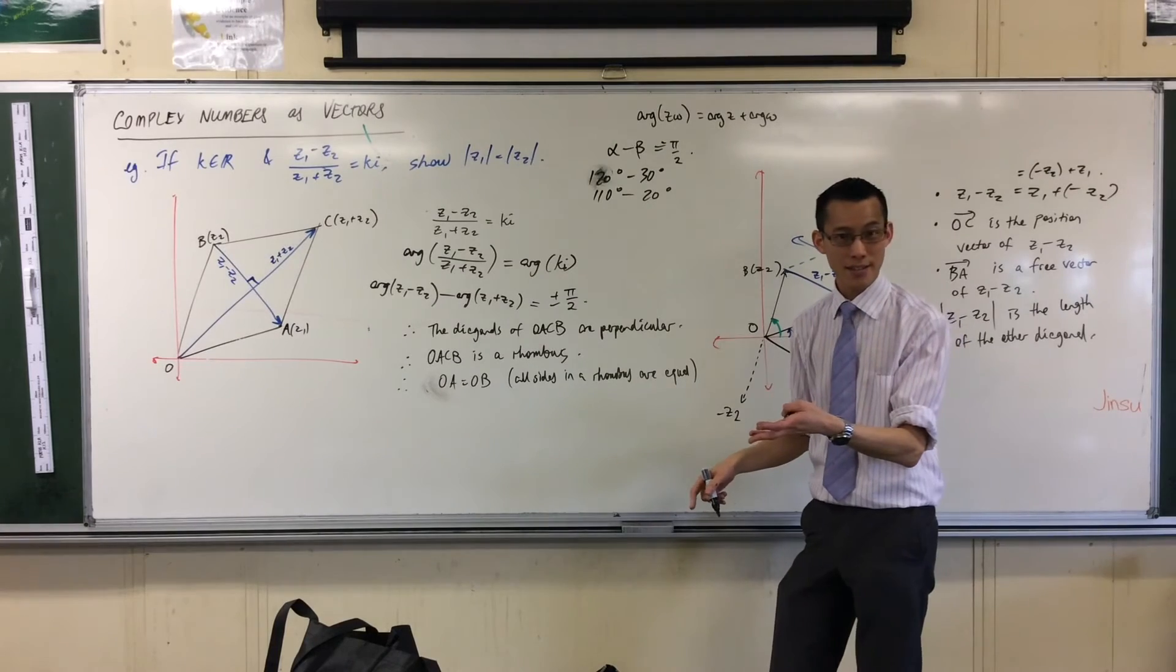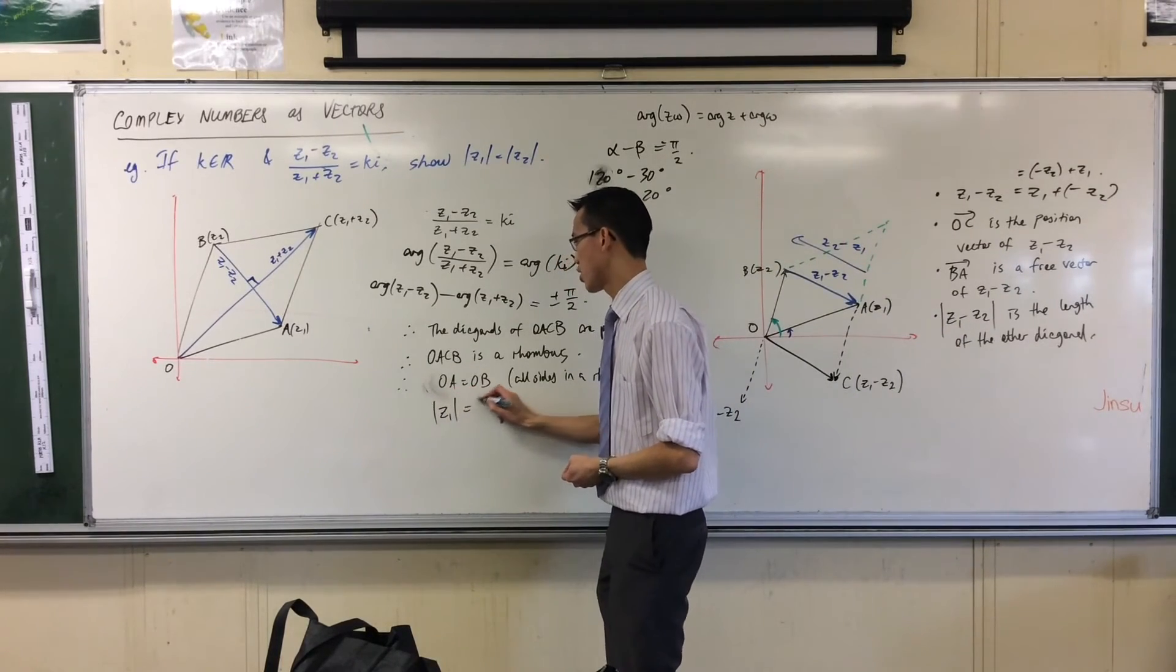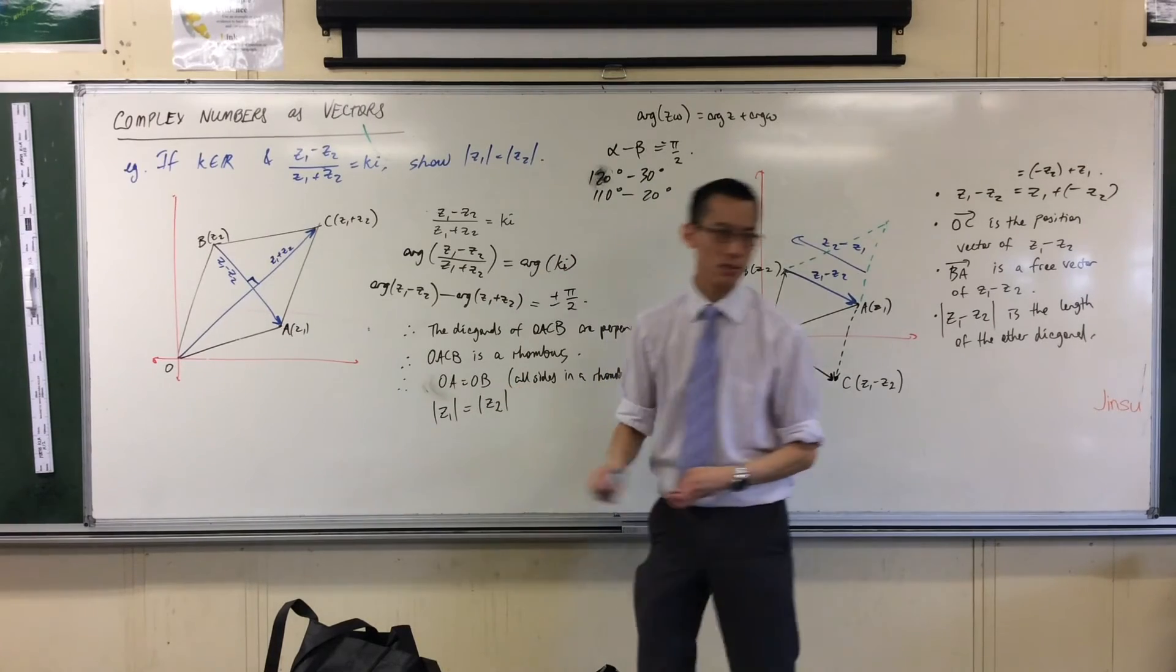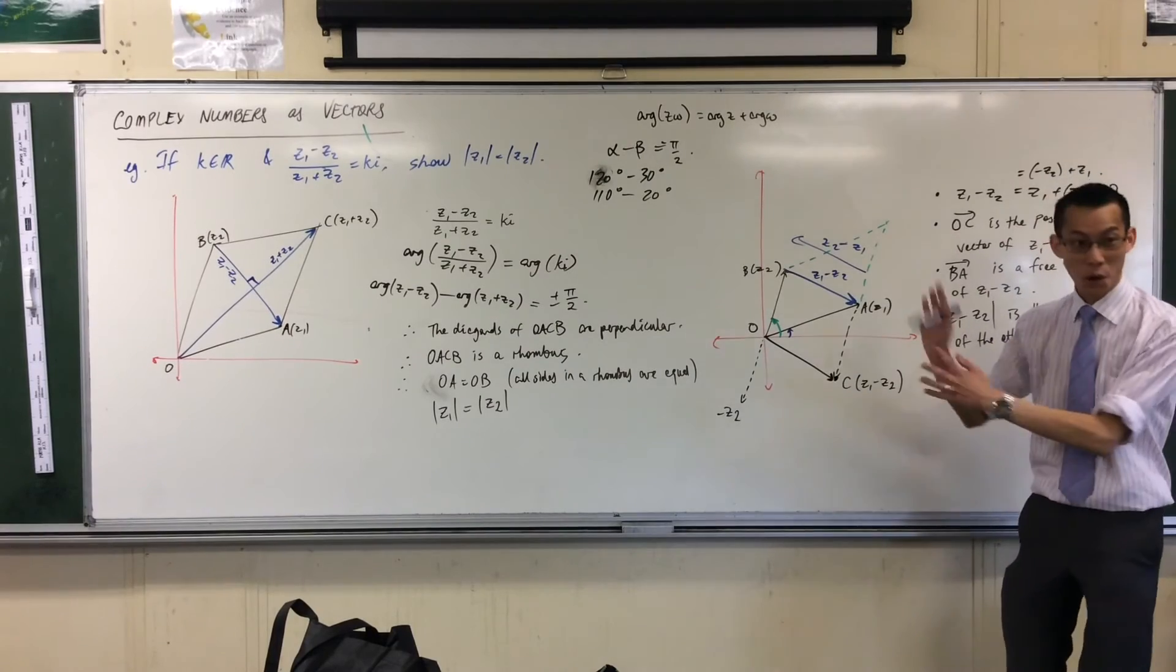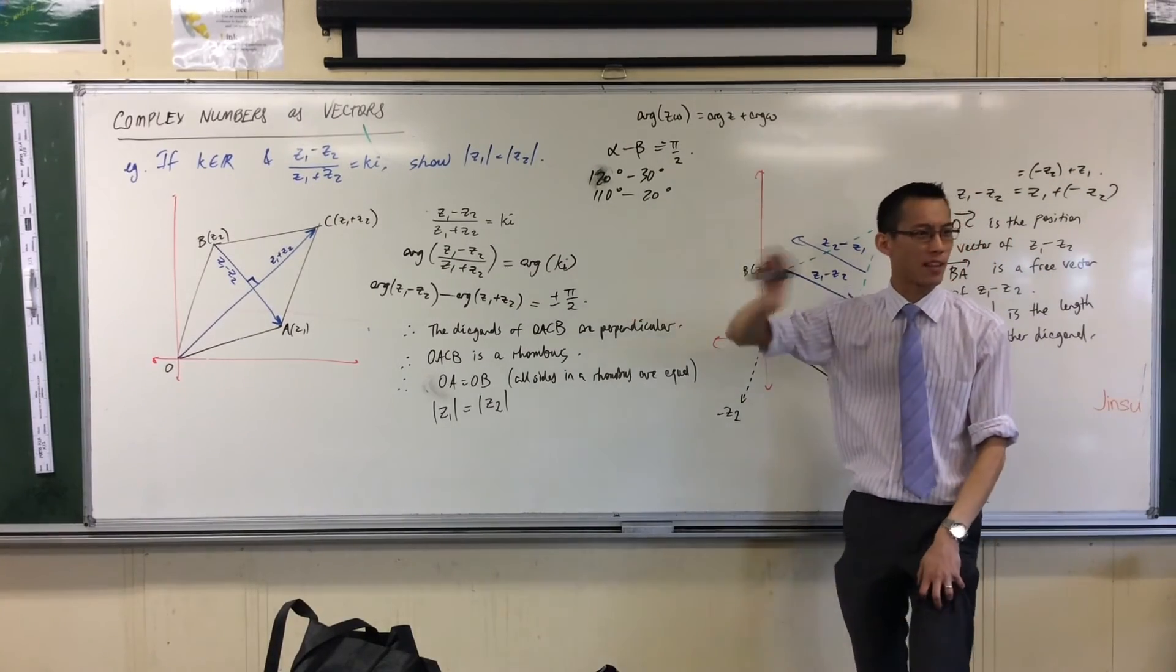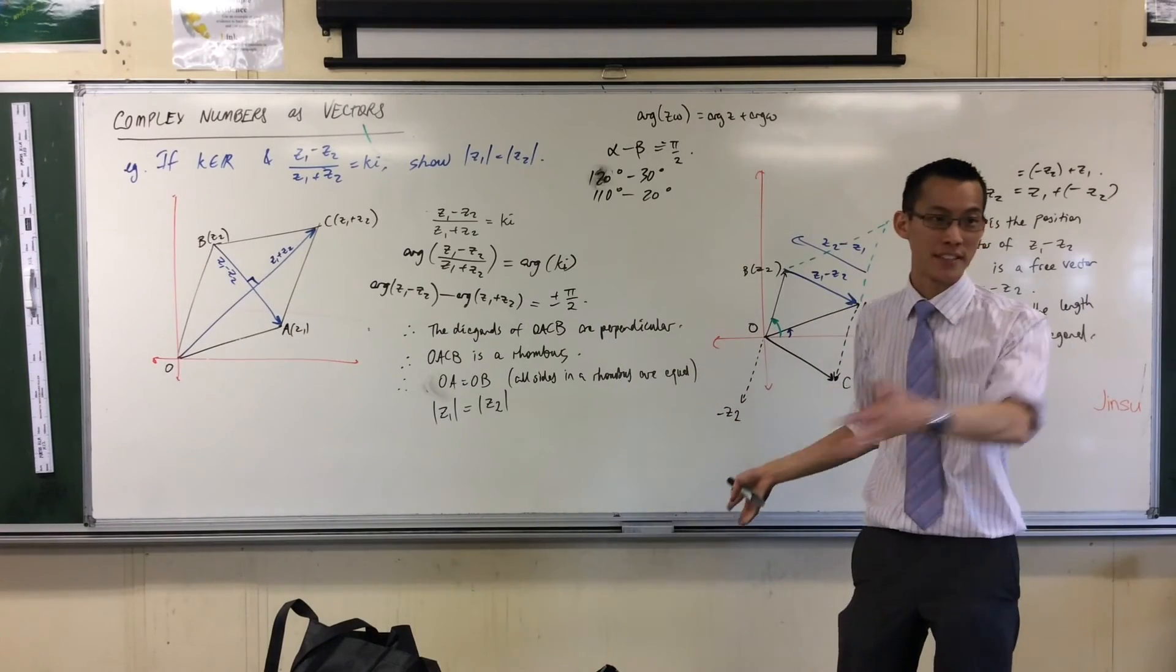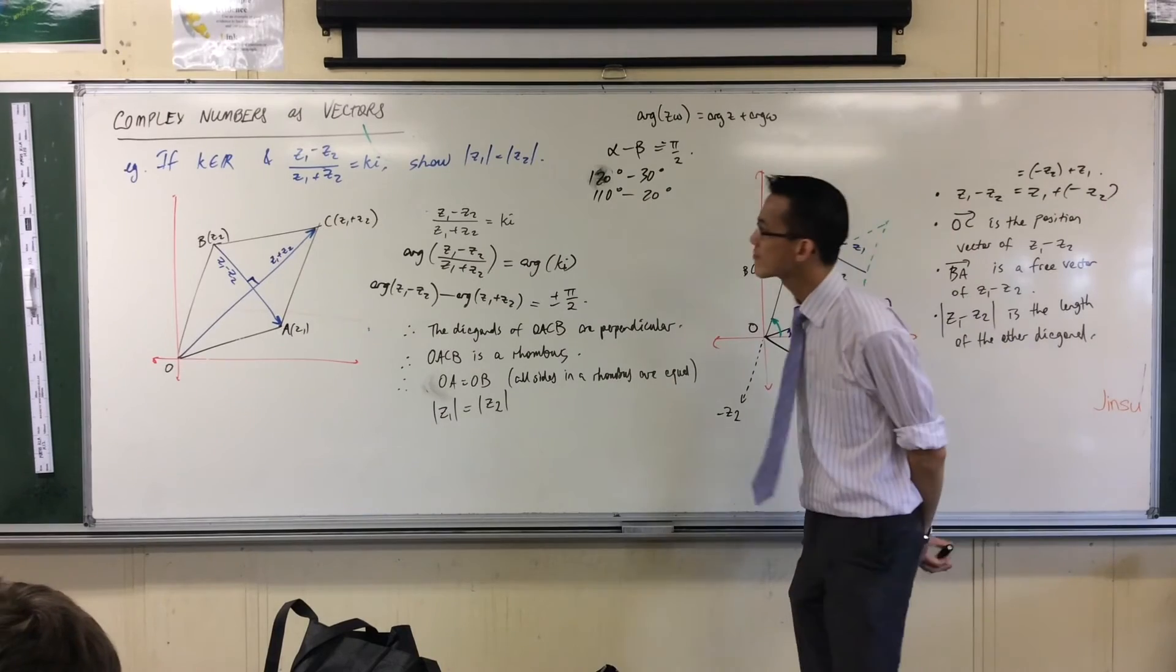And OA and OB represent respectively the vectors of Z1 and Z2, so their magnitudes are the same because I was talking about lengths, which are really magnitudes. No computation, right? We just use logic and what we know about the fabric of complex numbers and their geometry.